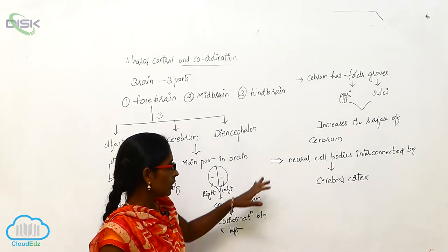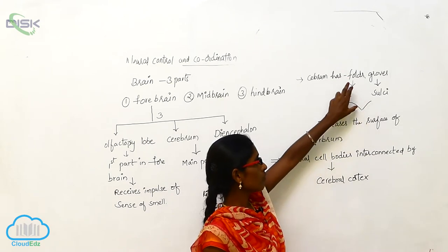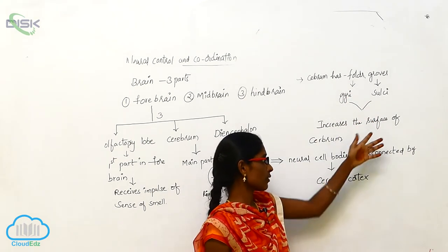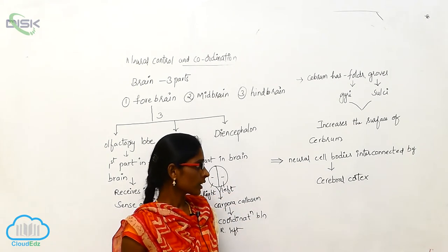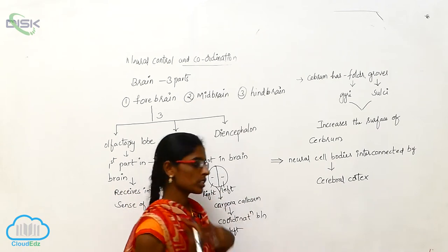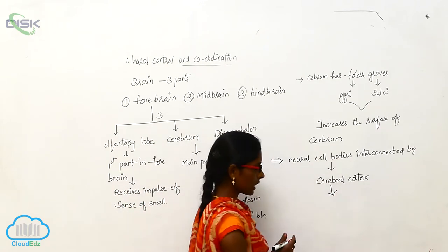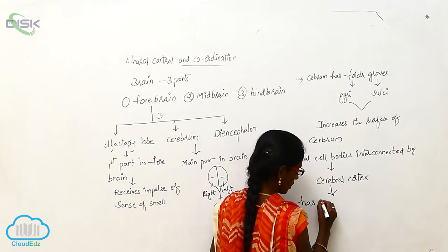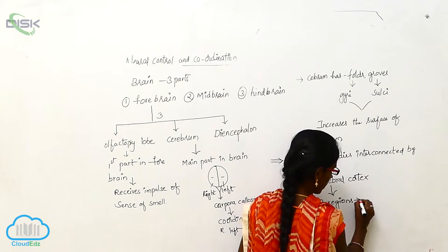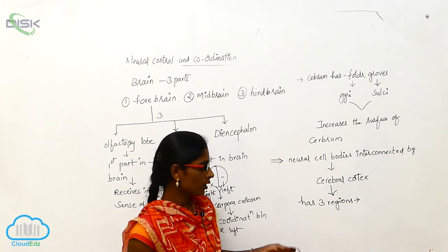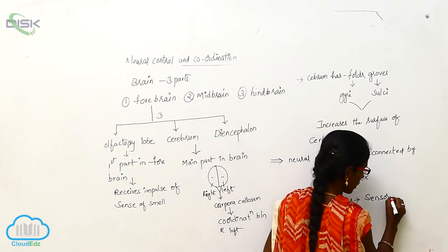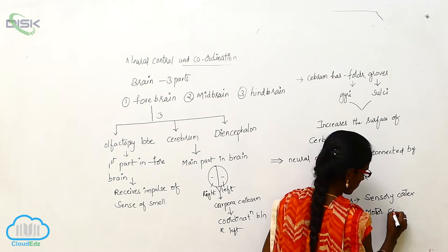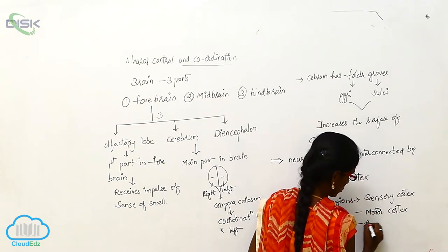The cerebrum has folds called gyri and grooves called sulci, which increase the surface of the cerebrum. Neurons are interconnected by the cerebral cortex. The cerebral cortex has three regions: the sensory cortex, motor cortex, and associated cortex.